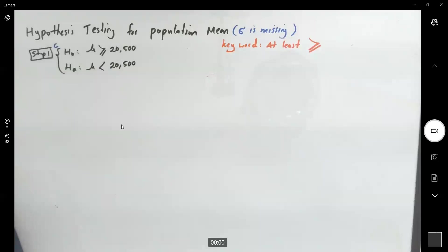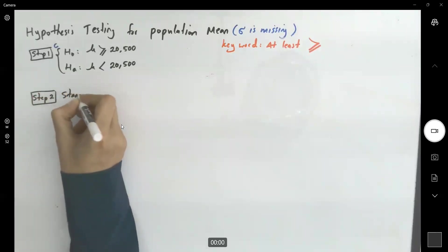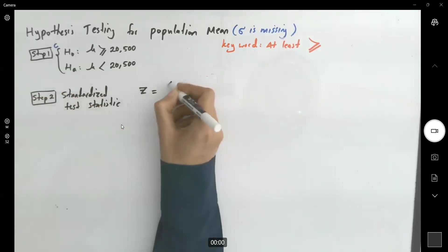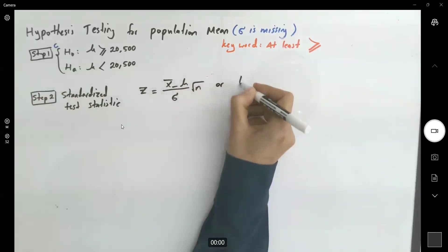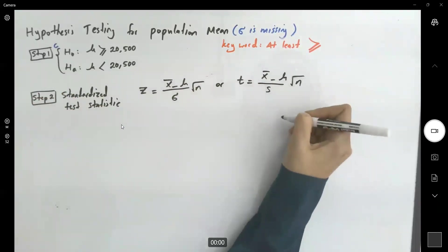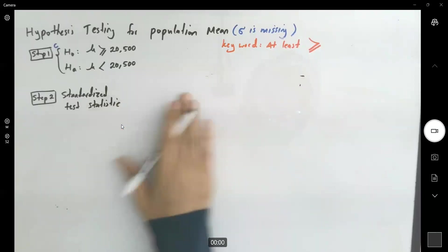Now, in the second step, we need to have a standardized test statistic. Is it going to be z equals to x bar minus mu divided by sigma times square root of n? Or is it going to be t equals to x bar minus mu divided by s times square root of n?